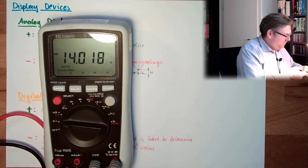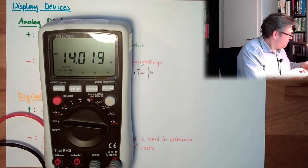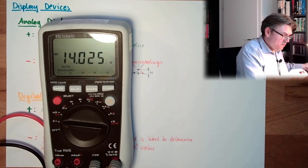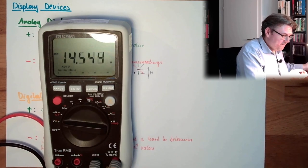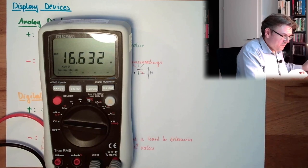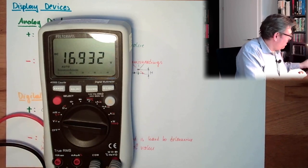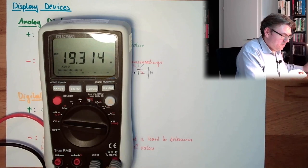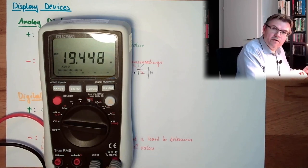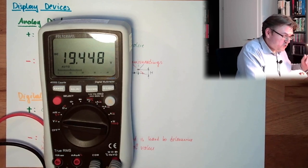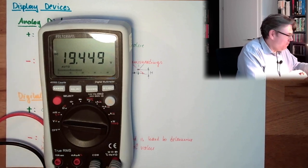So, if I increase now the voltage, you can see, this bar is also getting longer. Now we are in the middle of this measurement range. If it's in auto, this does not really help, because if I go down now...